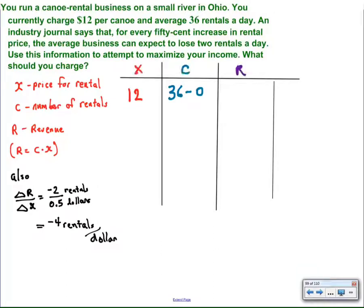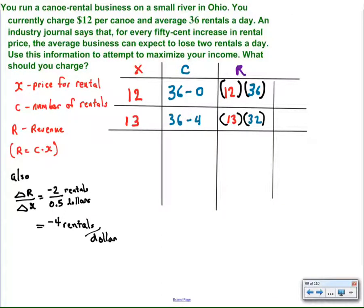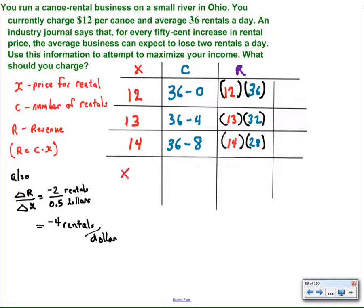So I'm going to form a table, starting with the given information: $12 per rental, 36 rentals, we don't lose any — that's the regular starting point. Revenue is the product: $12 times 36 rentals. Then I raise the price a dollar: $13 is $1 more, which means we lose four customers, down to 32. Raise the price another dollar — that's a $2 increase for a total of eight canoe rentals lost. So we multiply $14 per rental times 28 rentals to get our revenue.